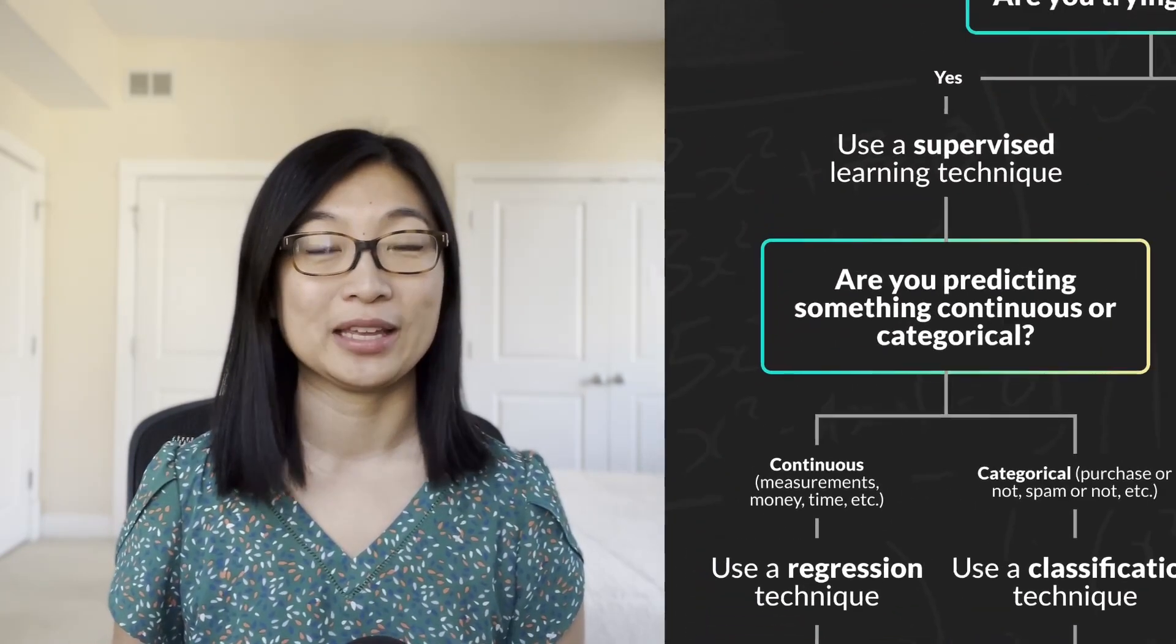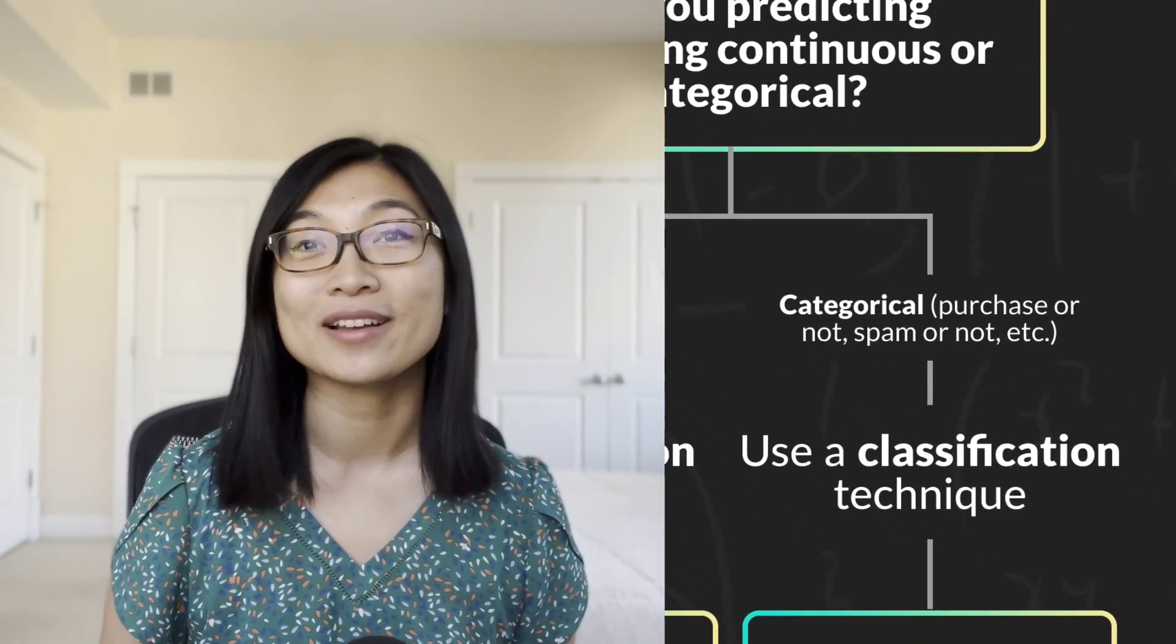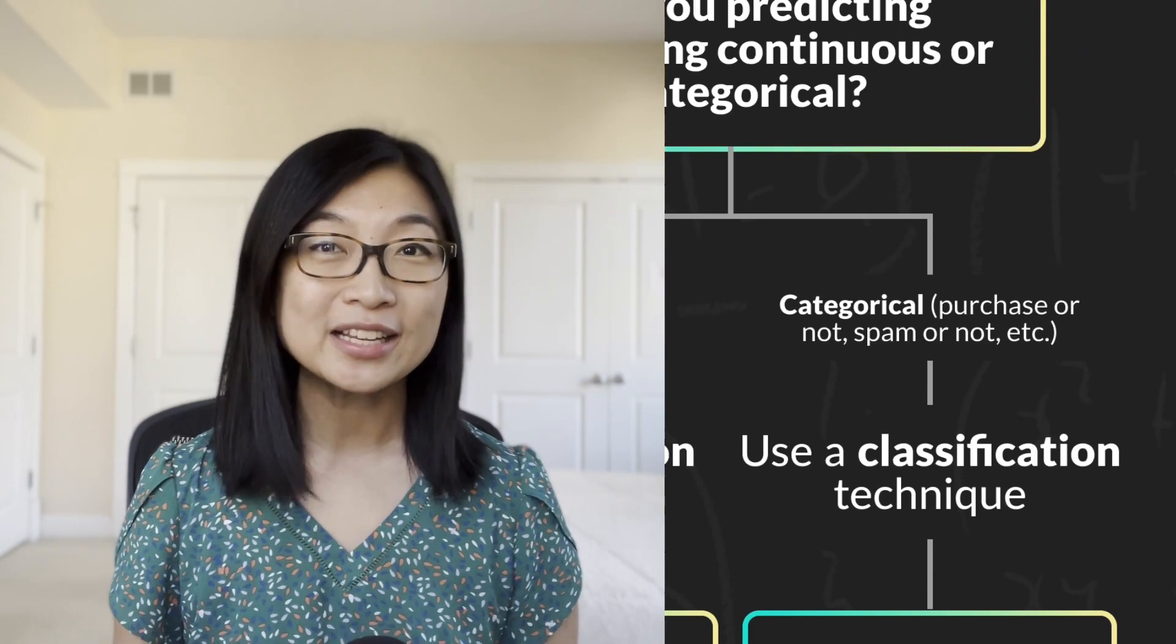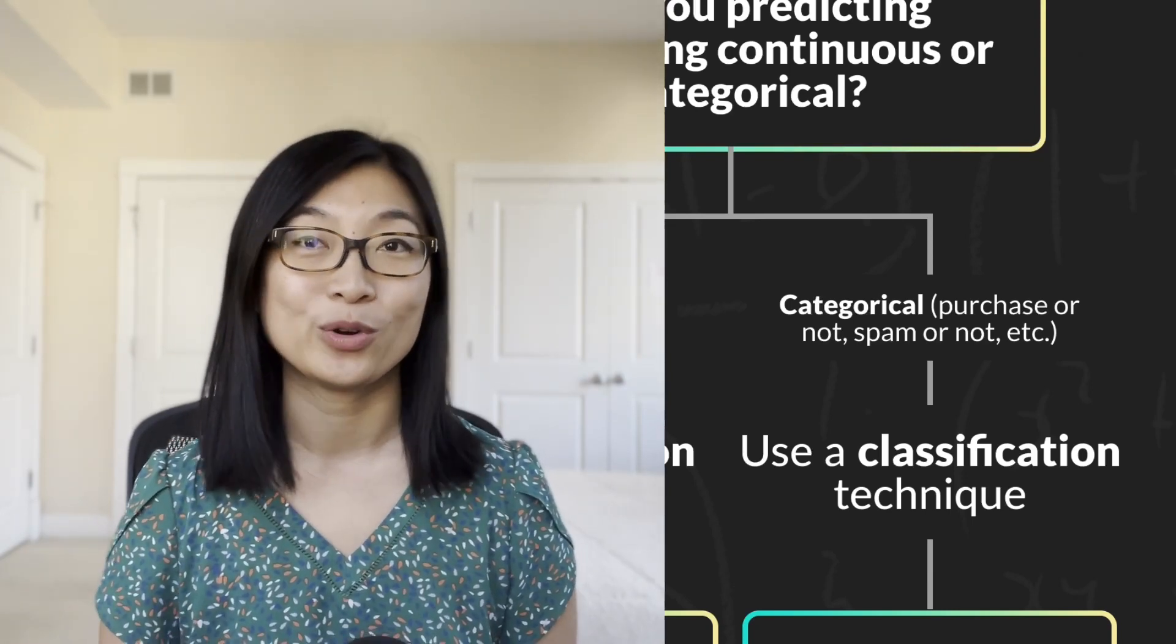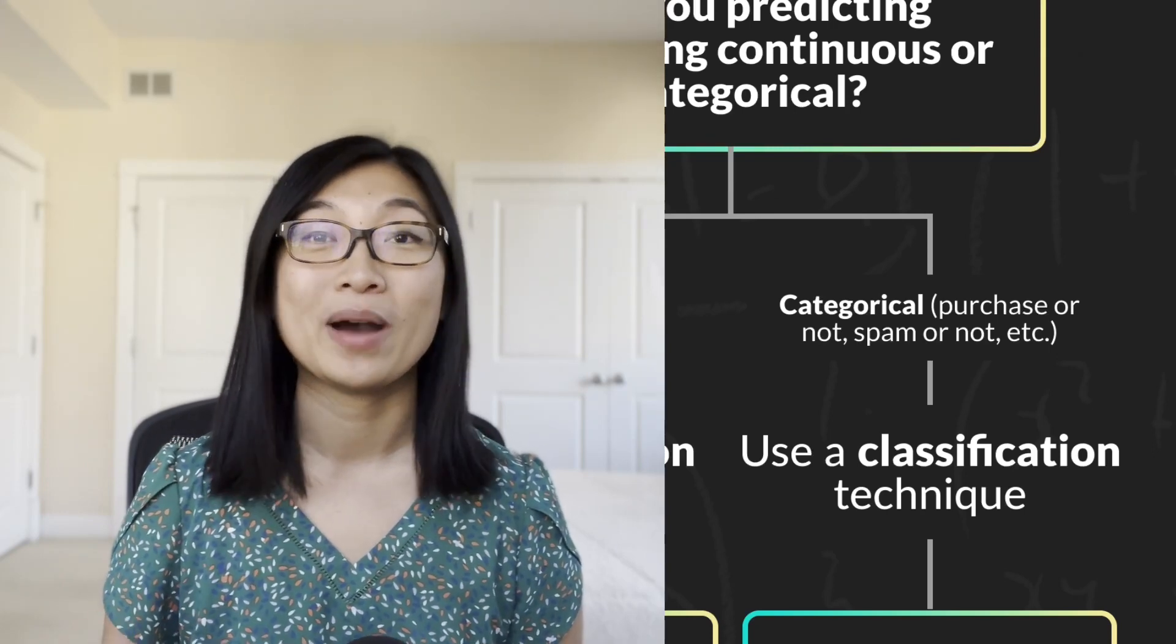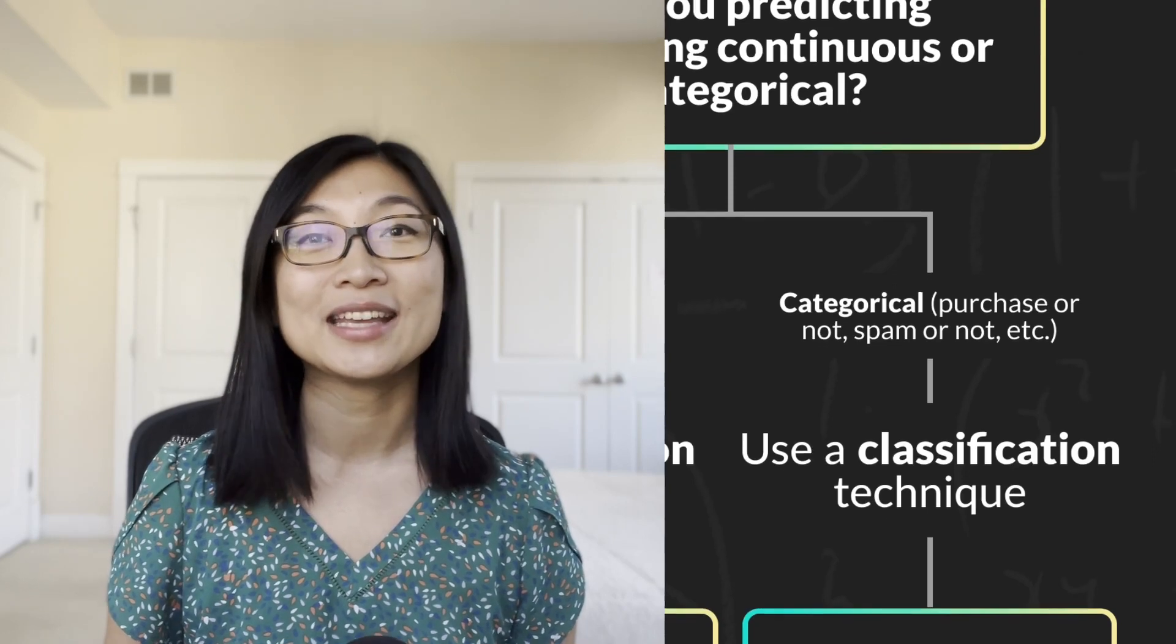Now let's say I'm not trying to predict something continuous, and I'm trying to predict something categorical. Then in that case, I would use a classification algorithm. So predicting something categorical is like predicting a zero or a one. So predicting if an email is spam or not, or predicting whether a customer will buy or not. In those cases, the most popular classification technique is logistic regression.